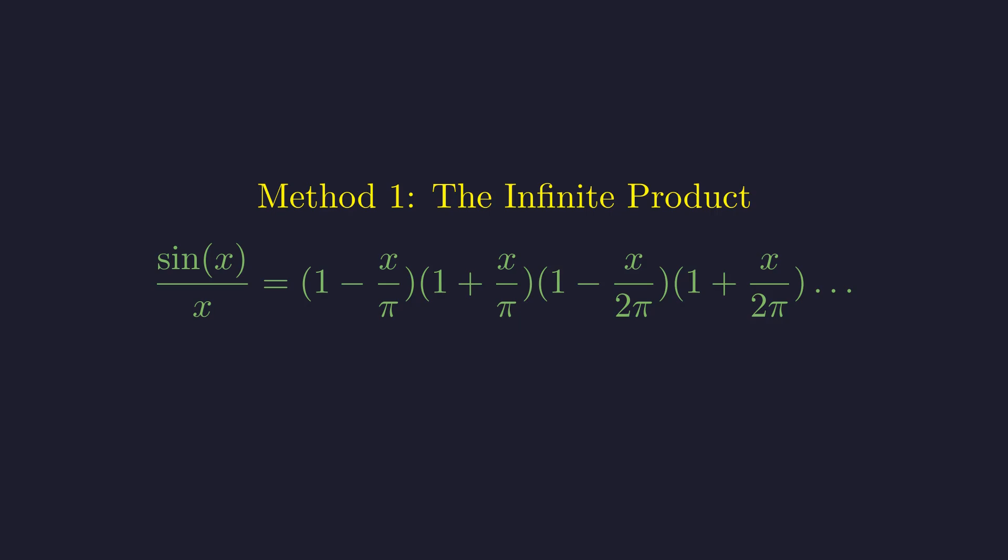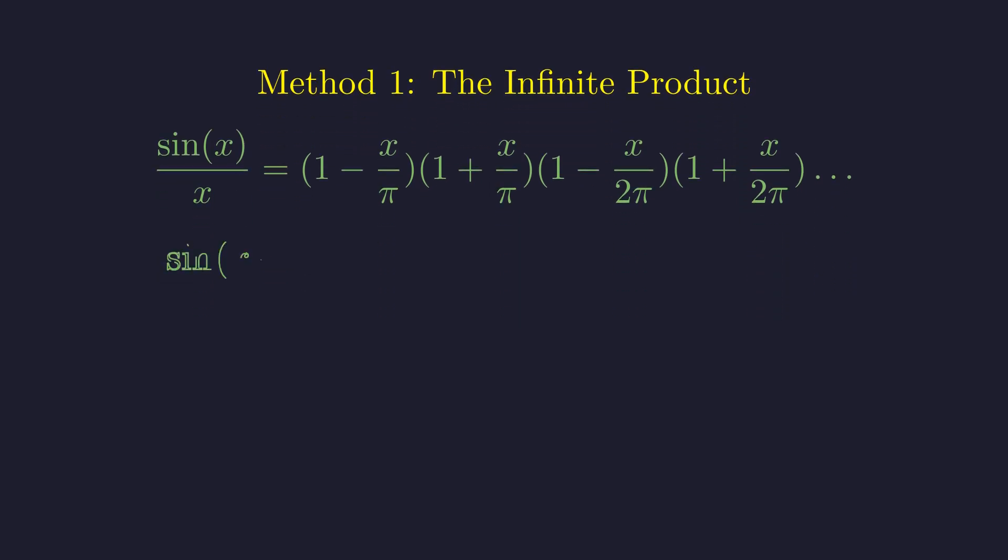Following our polynomial analogy, we can write it as an infinite product like this. Using the formula (a-b)(a+b) = a² - b², our product simplifies beautifully. Let's call this expression 1.